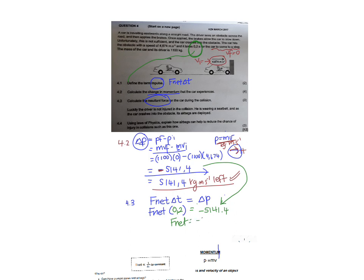We get an answer of negative 25707. So that would be 25707 forces measured in Newtons and the negative indicates to us to the left. And that would be the answer to that.